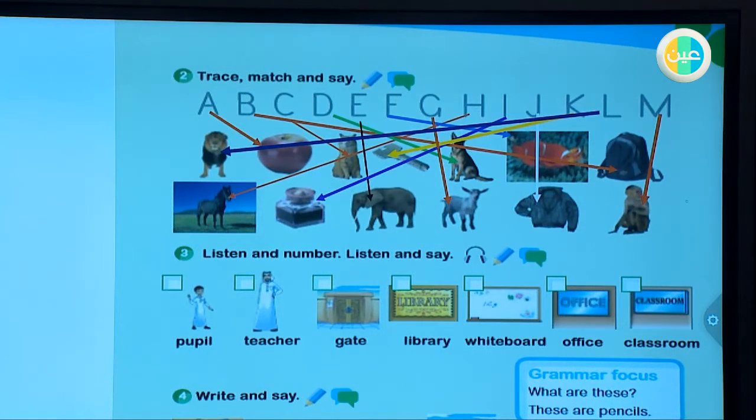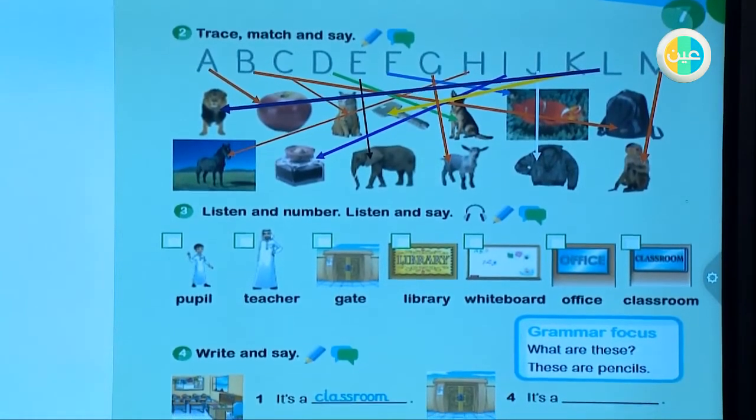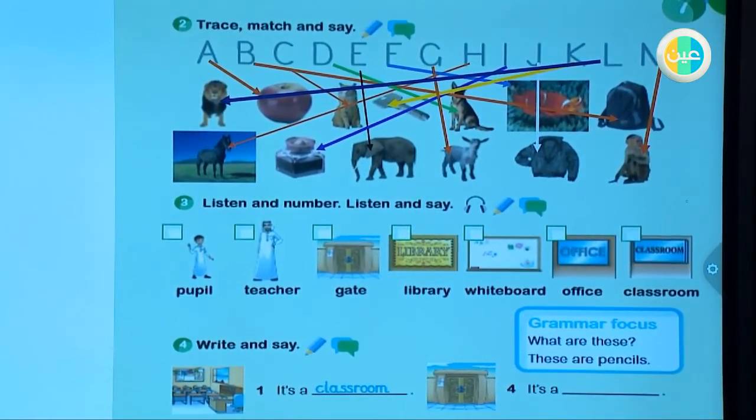Now dear, we move to number three. You are going to listen and put numbers and listen also and repeat. Please repeat after the audio. Are you ready? Good job. We start. Unit 7, lesson 2, activity 3. Listen and number. Listen and say. Repeat.